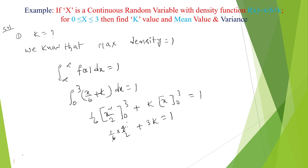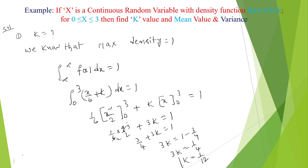Continuing: 3/4 + 3k = 1, so 3k = 1 − 3/4 = 1/4, therefore k = 1/12. So using the density function property, we calculate the k value as 1/12.